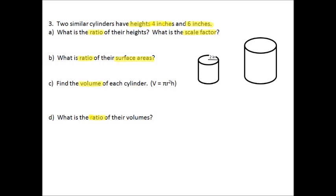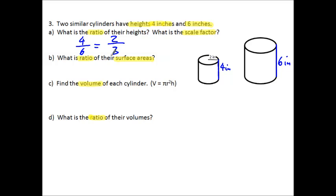The heights of the two cylinders are 4 inches and 6 inches. The smaller one has a height of 4 inches and the larger cylinder has a height of 6 inches. So the ratio of the heights is 4 to 6, which we can simplify to 2 over 3. And that is our scale factor.